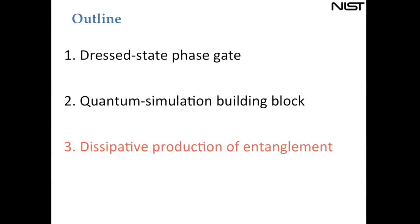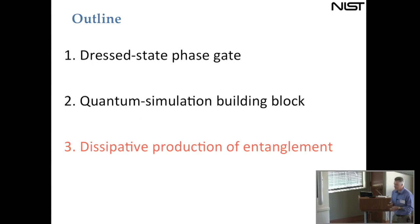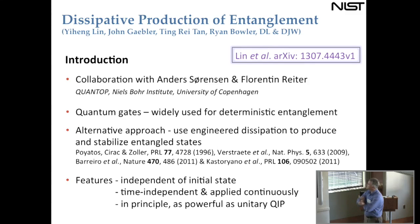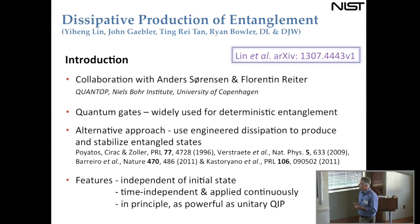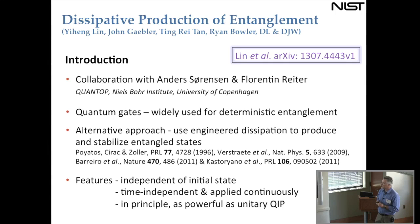The last topic is a different method — dissipative production of entanglement — a topic already discussed at this meeting. This experiment was a collaboration with theoreticians Anders Sørensen and Florentin Reiter at the Niels Bohr Institute. Typically we use quantum gates for deterministic entanglement, but this scheme is an alternative approach: engineering dissipation to produce and stabilize a particular entangled state.